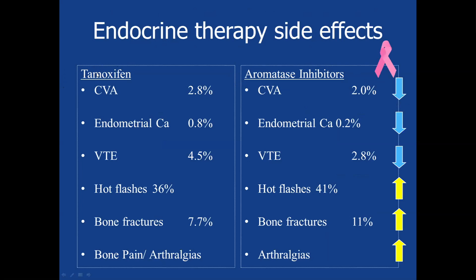Tamoxifen and aromatase inhibitors have two differential side effect profiles. With tamoxifen, being a selective estrogen receptor modulator, there's actually uptake of the estrogen receptor in the uterus — increasing endometrial cancer risk — as well as increased risk of thrombotic events. On bone effects, tamoxifen's estrogen is modulated to increase in bone, so bone density may actually increase. Aromatase inhibitors, with more complete decrease in estrogen production, carry increased risk of osteoporosis, osteopenia, and bone fractures, but decreased risk of endometrial cancer and thrombotic events.